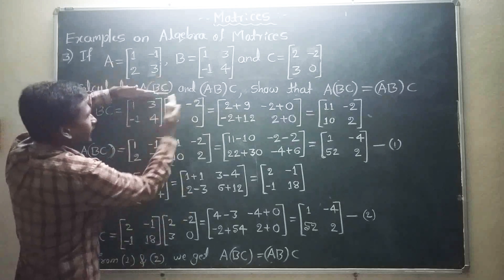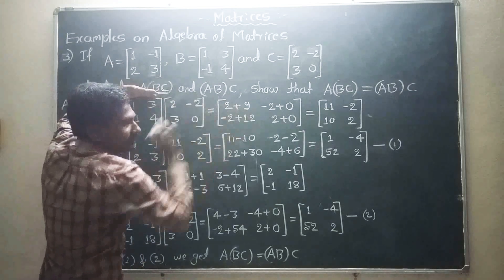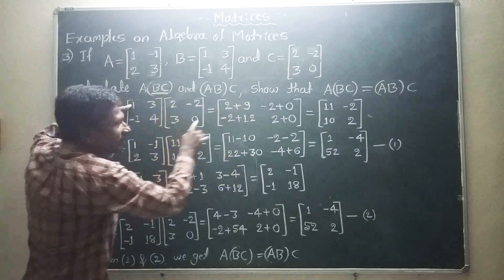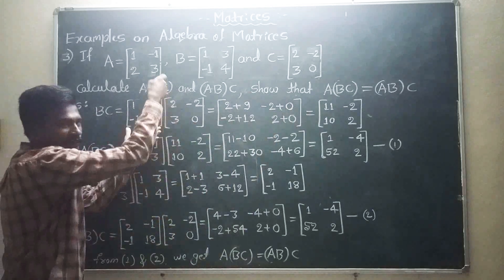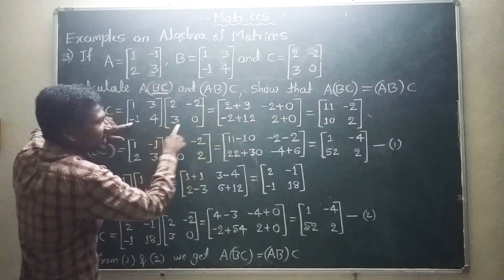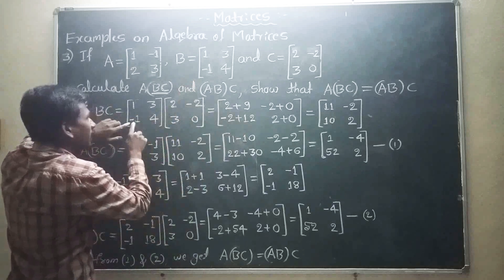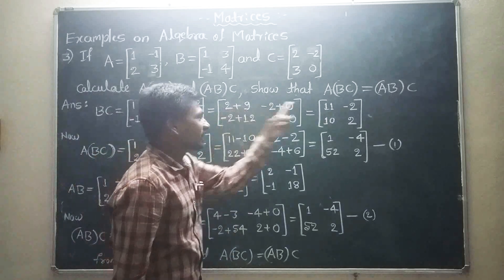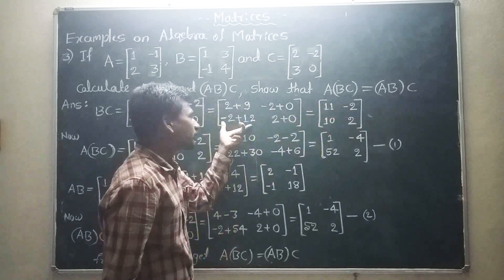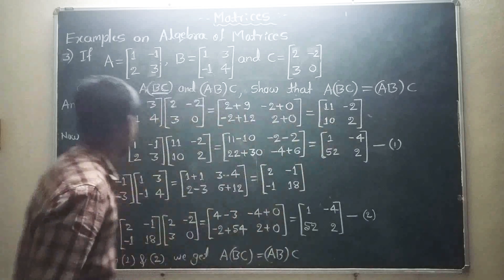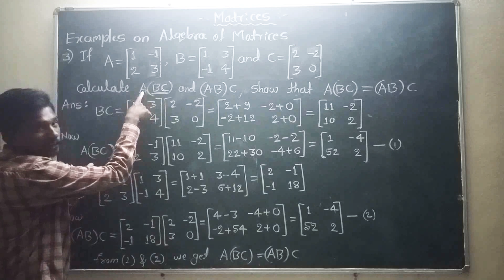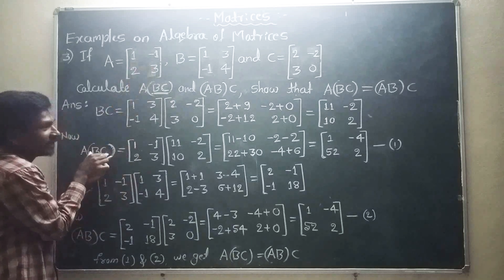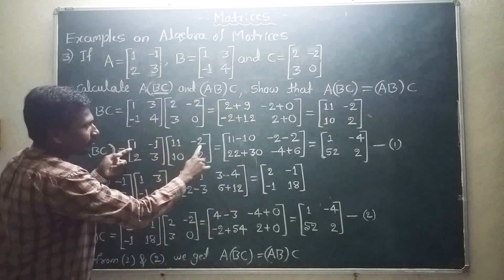B into C, row into column: first row first column 1 into 2 plus 3 into 3 equals 2 plus 9 equals 11. First row second column 1 into minus 2 plus 3 into 0 equals minus 2 plus 0 equals minus 2. Second row first column: minus 1 into 2 plus 4 into 3 equals minus 2 plus 12 equals 10. Second row second column: minus 1 into minus 2 plus 4 into 0 equals 2 plus 0 equals 2. So B into C equals the matrix 11, minus 2, 10, 2. Now A into BC equals A matrix into B into C result: row into column. 1 into 11 plus minus 1 into 10 equals 11 minus 10 equals 1. 1 into minus 2 plus minus 1 into 2 equals minus 2 minus 2 equals minus 4. 2 into 11 plus 3 into 10 equals 22 plus 30 equals 52. 2 into minus 2 plus 3 into 2 equals minus 4 plus 6 equals 2. This is equation number 1.